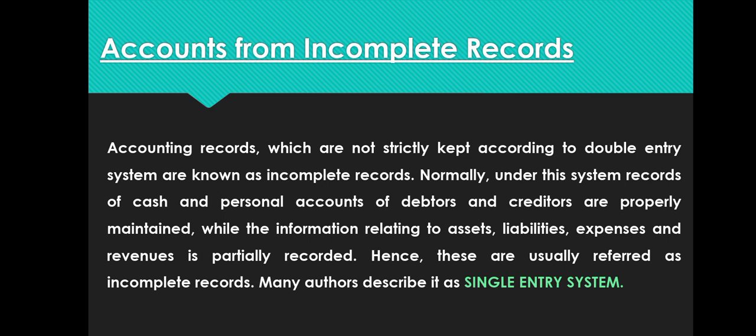Normally under this system, records of cash transactions and personal accounts of debtors and creditors are properly maintained, while information regarding assets, liabilities, expenses, and revenues is only partially recorded. Hence these are usually referred to as incomplete records. Some people give only one effect — either debit or credit — or sometimes both, but they do not maintain a complete record.